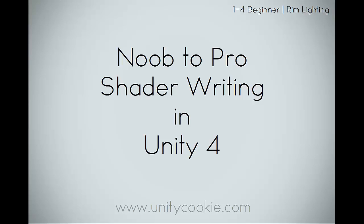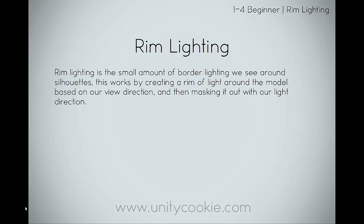Let's begin. Rim lighting is the small amount of border lighting we see around silhouettes. It works by creating a rim of light around the model based on our view direction and then masking it out with our light direction.